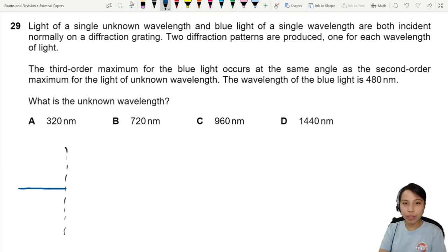Here's the part where it's important. The third order maximum for blue light occurs at the same angle as the second order for an unknown wavelength.